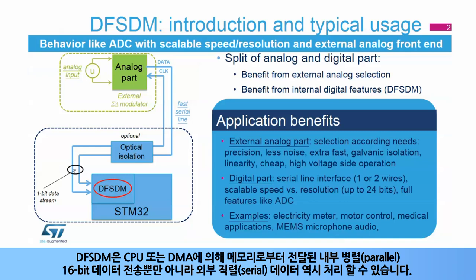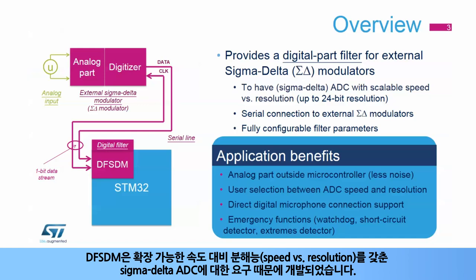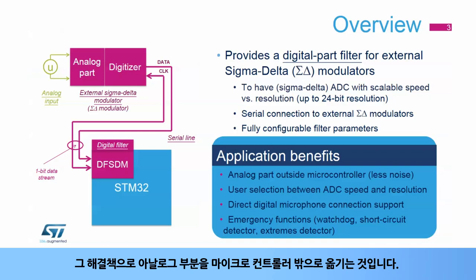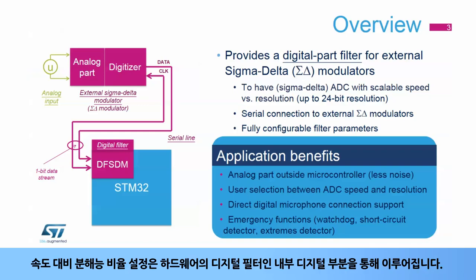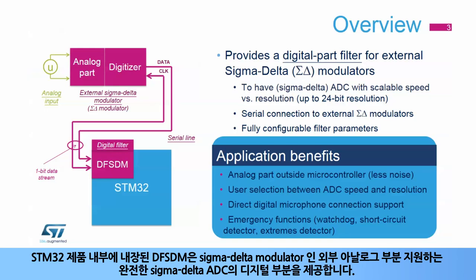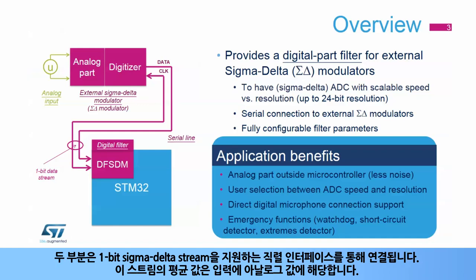The DF-SDM was developed due to a need for a sigma-delta ADC with scalable speed versus resolution. More than 16-bit accuracy inside a microcontroller is a problem because of noise from the digital part. The solution is to move the analog part outside the microcontroller. The speed versus resolution ratio setting is a task for the internal digital filter in hardware. Although it behaves like a complete analog-to-digital converter with an external analog front end, the DF-SDM is purely digital, with its analog part outside the microcontroller. Both parts are connected through a serial interface providing a 1-bit sigma-delta stream.